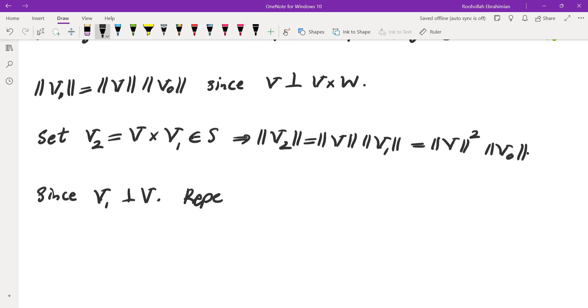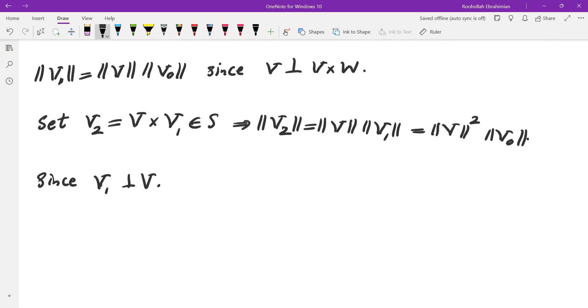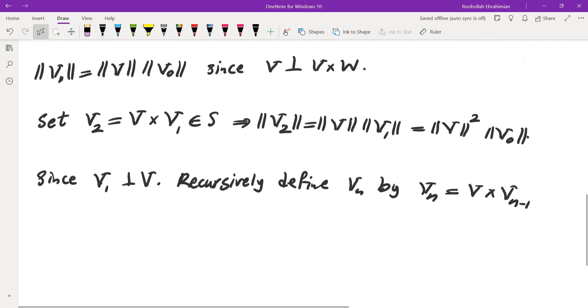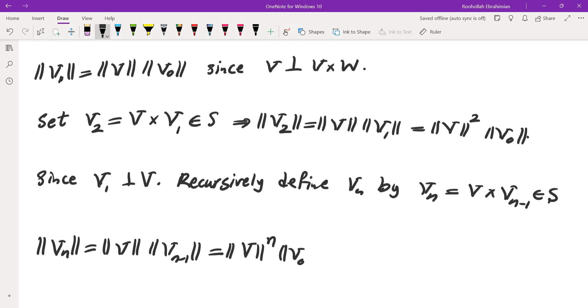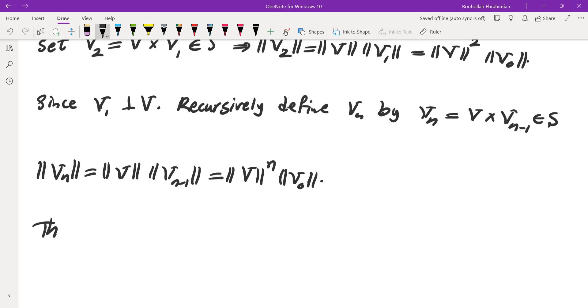So now, recursively define Vₙ by Vₙ equals V cross Vₙ minus 1, which is in S. Magnitude of Vₙ becomes magnitude of V magnitude of Vₙ minus 1, which is by inductive hypothesis. Thus, magnitude of V must be 1 since S is finite.